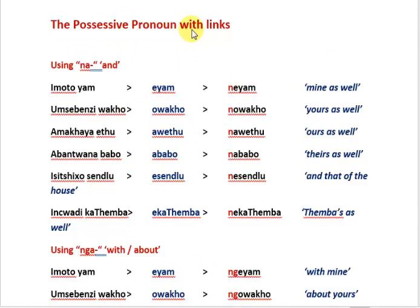Looking at the possessive pronoun with links, we're going to cover location, identifying, and using 'na' (and/with). So 'eyam' becomes 'neyam' — mine as well.